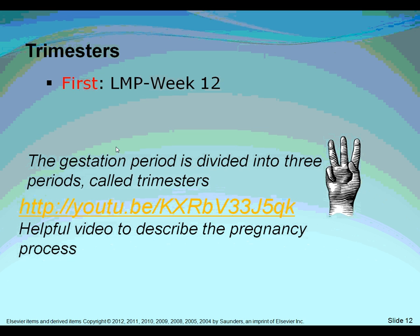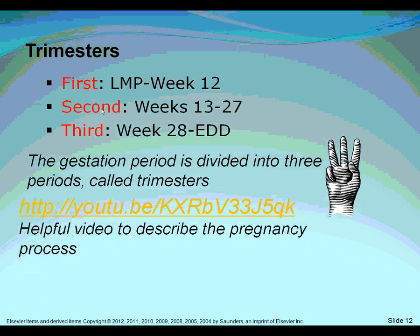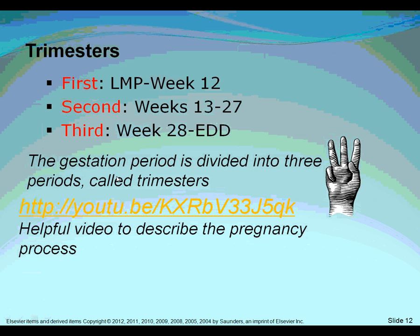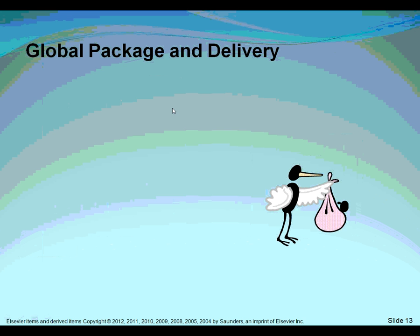The gestation period is divided into three periods called trimesters. There is a helpful video describing the pregnancy process on YouTube, which I will send out in the discussion forum this week. It describes exactly when the heart begins to beat and when the neck uncurls so the fetus looks more human.